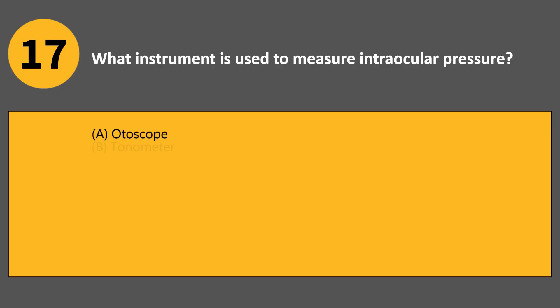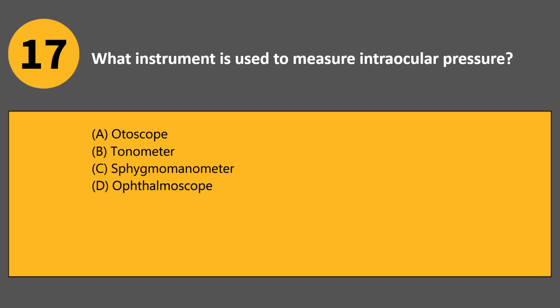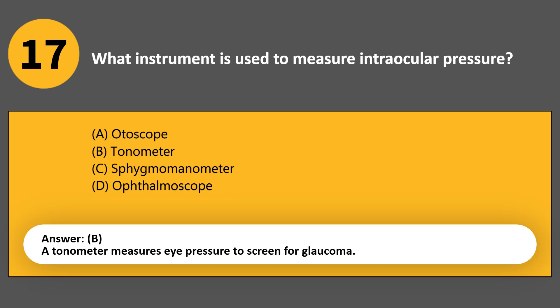What instrument is used to measure intraocular pressure? A. Otoscope. B. Tonometer. C. Sphygmomanometer. D. Ophthalmoscope. Answer B. A tonometer measures eye pressure to screen for glaucoma.